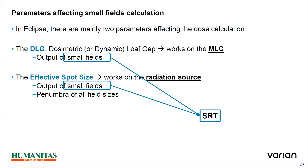The parameters affecting small field calculation in Eclipse — there are mainly two parameters affecting dose calculation. Dosimetric leaf gap (DLG) works on the output of small fields. The effect of spot size works on the radiation source output of small fields and the number of small fields. DLG affects the output depending on spot size, which we place in the system during beam commissioning, and these two parameters mainly influence SRT.